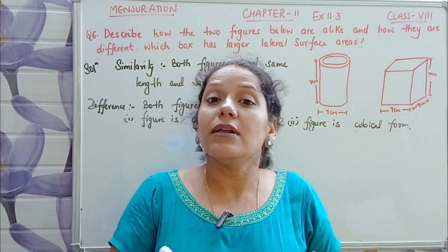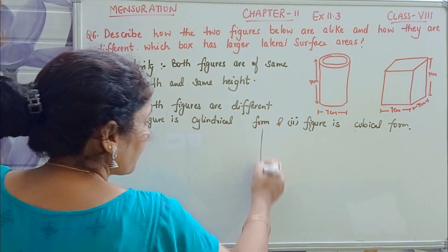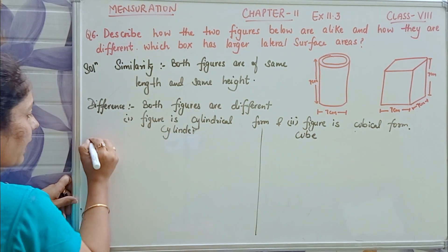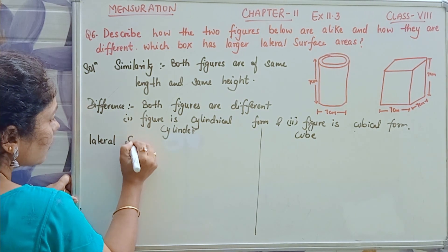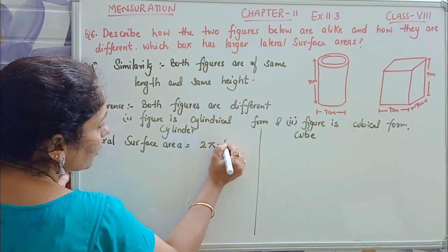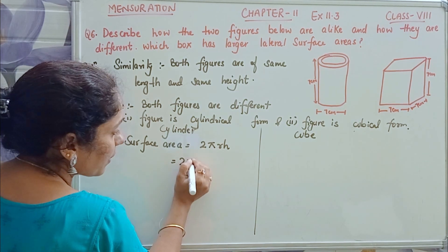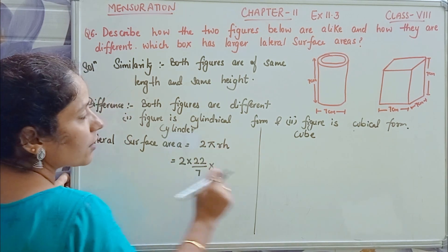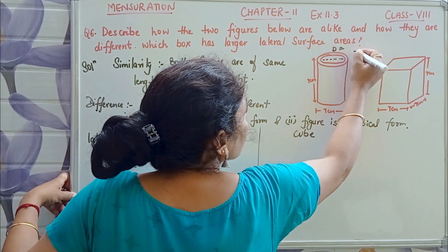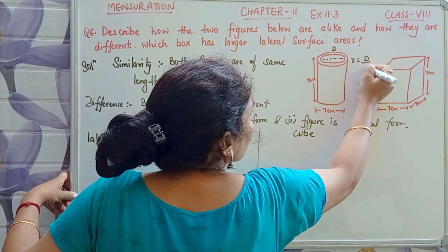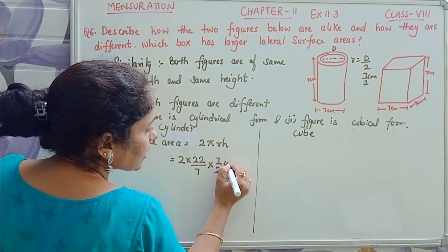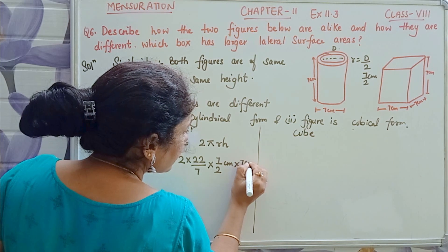Now, which box has larger lateral surface area? First, we take the cylinder. The lateral surface area of a cylinder is 2πrh. The value of π is 22 by 7. The radius equals diameter by 2, which is 7 by 2 cm. The height is 7 cm.